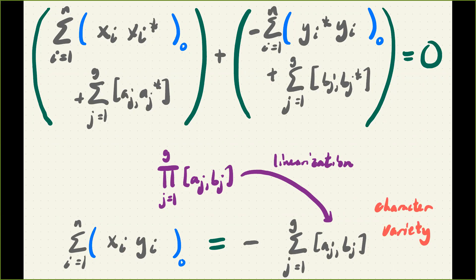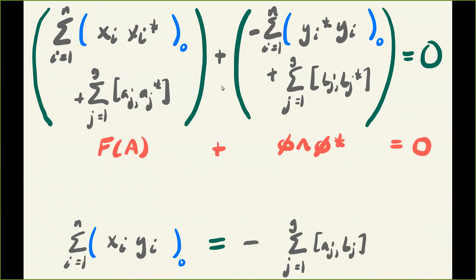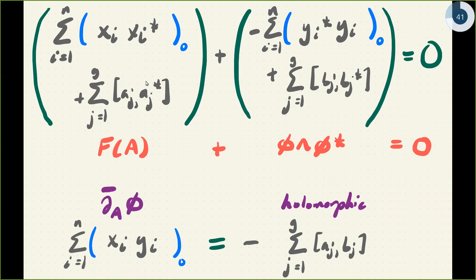If you stand back for a second: the failure of the polygon to close—thinking of just the x and a data—is corrected by choices of the cotangent data, the y's and the b's. That's very similar to the first Hitchin equation, where the curvature, the failure of a unitary connection on a bundle to be flat, is corrected or measured by the choice of a Higgs field φ, which is cotangent data. The analogy continues: here we have the 'connection' part acting on the cotangent part, so the second equation is the analog of the other Hitchin equation. This is more than an abstract analogy.